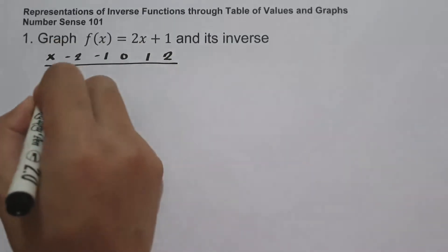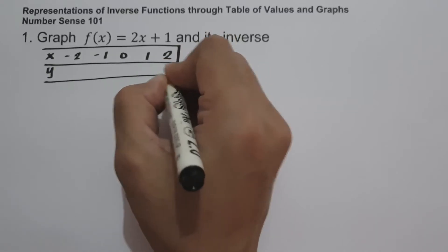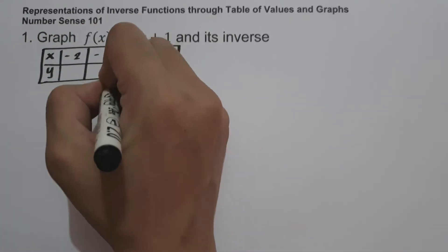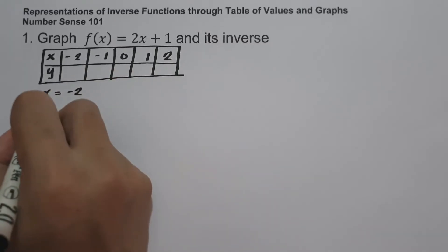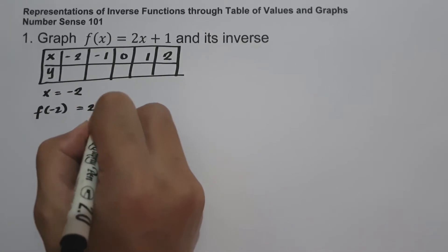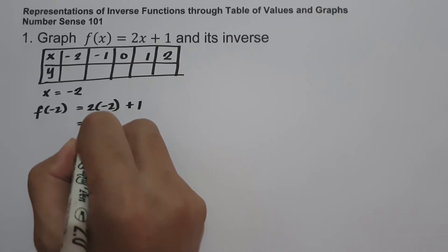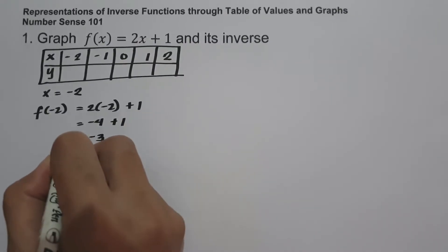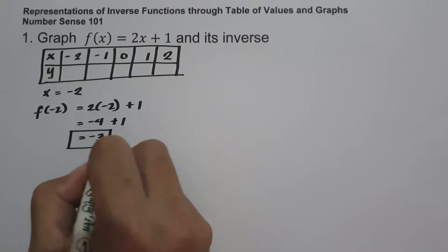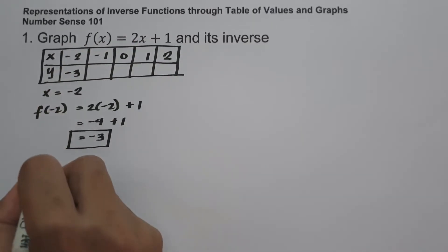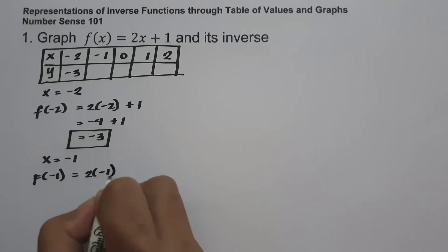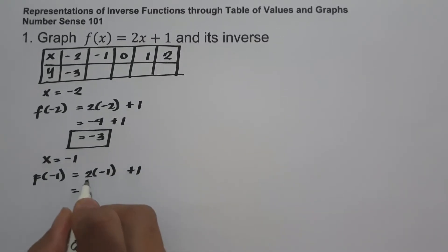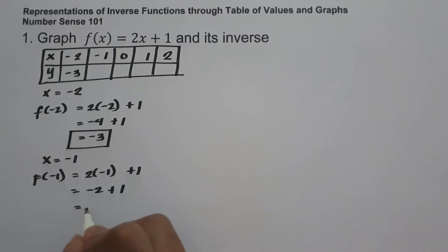We are going to use the values of x to find the values of y. For x equals negative 2: f of negative 2 equals 2 times negative 2 plus 1. Two multiplied by negative 2 is negative 4, plus 1, and that is negative 3. For x equals negative 1: f of negative 1 equals 2 times negative 1 plus 1, which gives negative 2 plus 1, and that is negative 1.